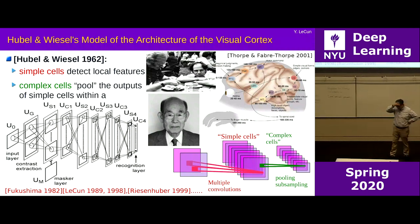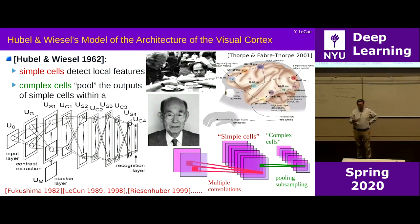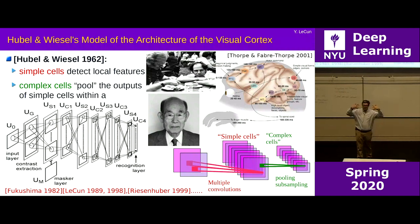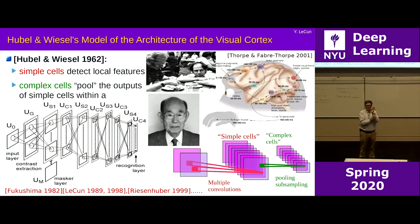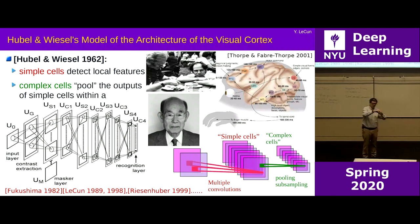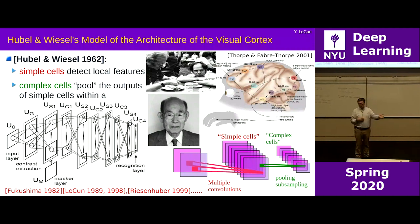Interestingly, the vertebrate eye made a design mistake that invertebrates did not: the wires collecting information from the retina are in front of it, blocking part of the view, and must punch a hole through the retina — creating the blind spot. It's much better to have wires come out the back, which is what invertebrates like squids and octopuses do. Vertebrates got that wrong.